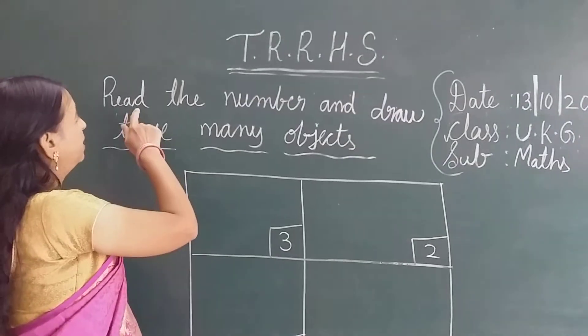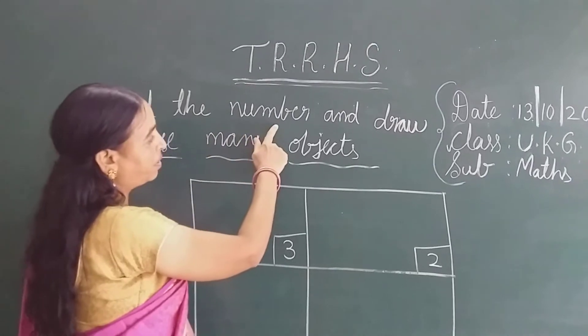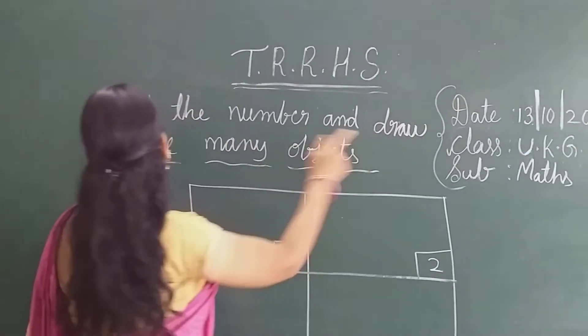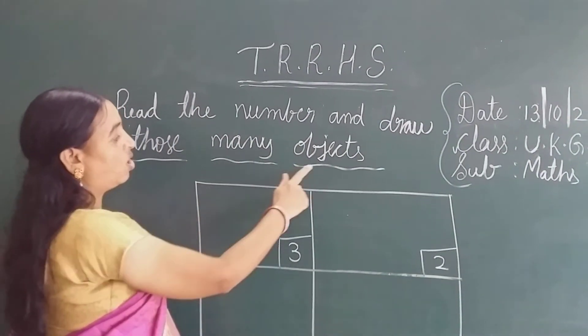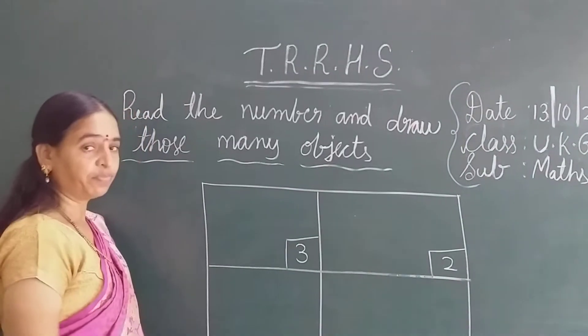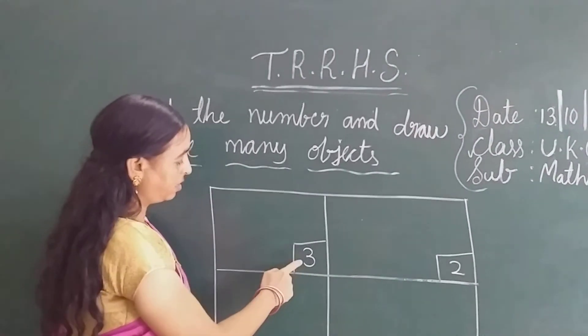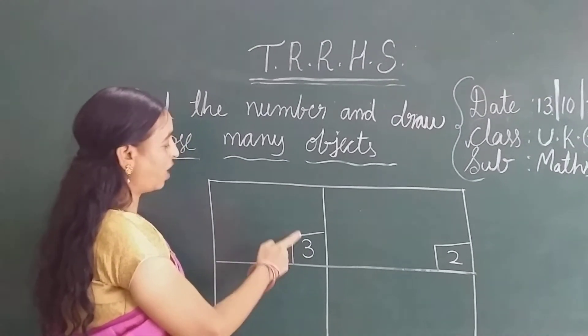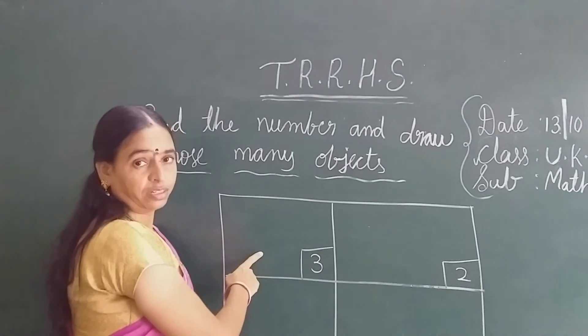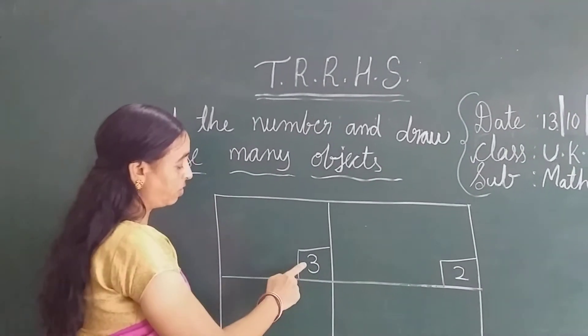Now look at here. Read the number and draw those many objects. Means here number is there. You have to draw the objects. What is the number?